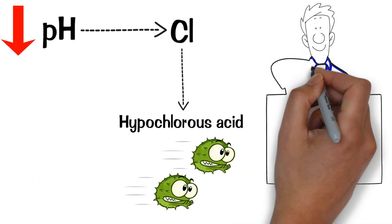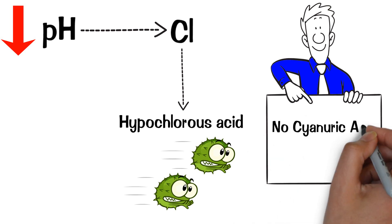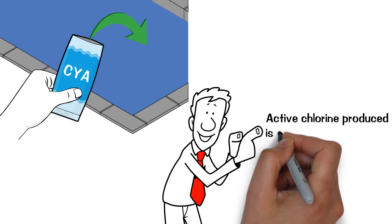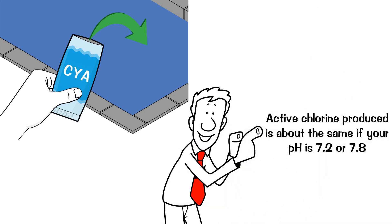Now here's the kicker. This only applies when there's no cyanuric acid in the water. Once the user adds CYA to the water, the active chlorine produced is about the same if your pH is 7.2 or 7.8.